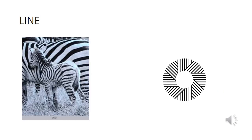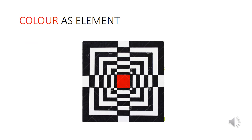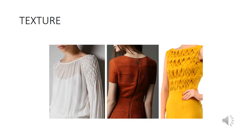Line as a design element is quite obvious in the zebra. Here you can see how color has been used to create emphasis. Square has been used effectively as a shape for making the composition. Here is an example of how texture has been effectively used in fashion design.